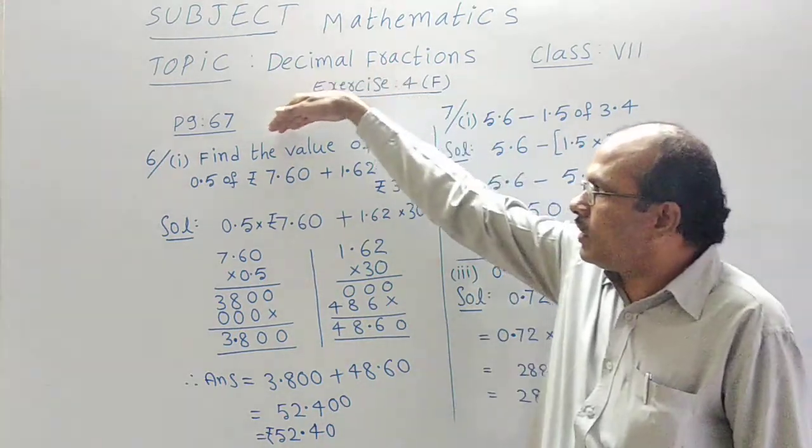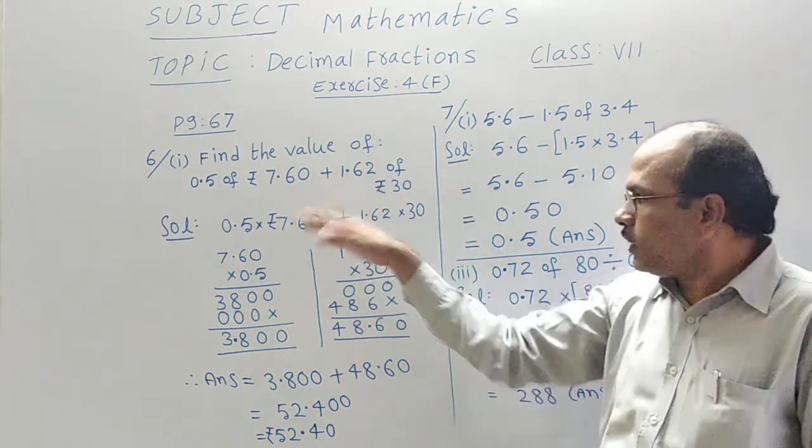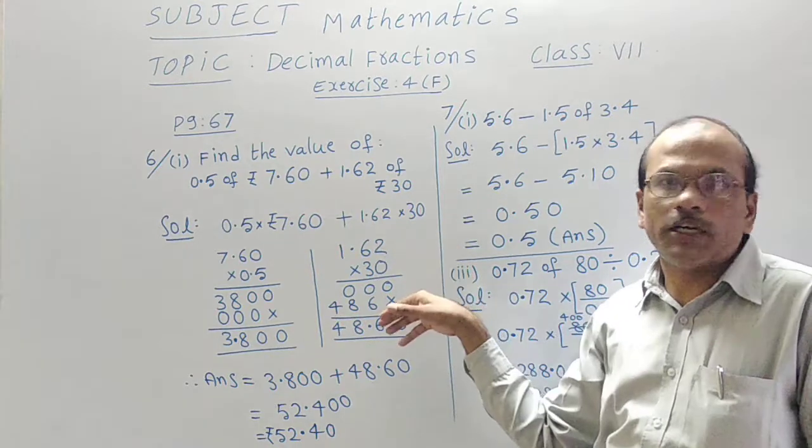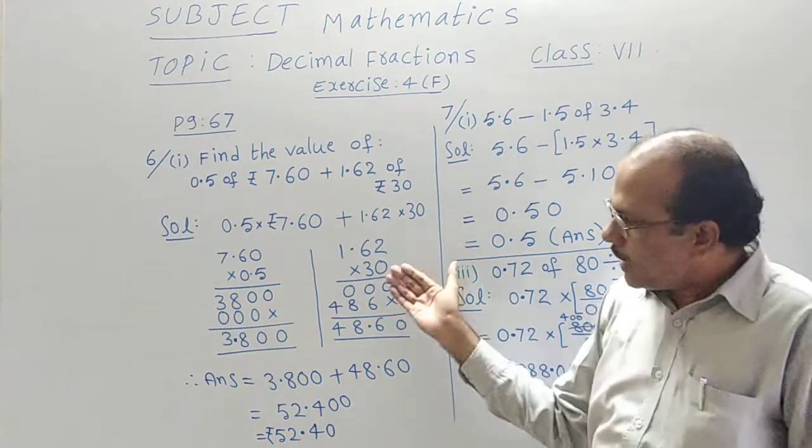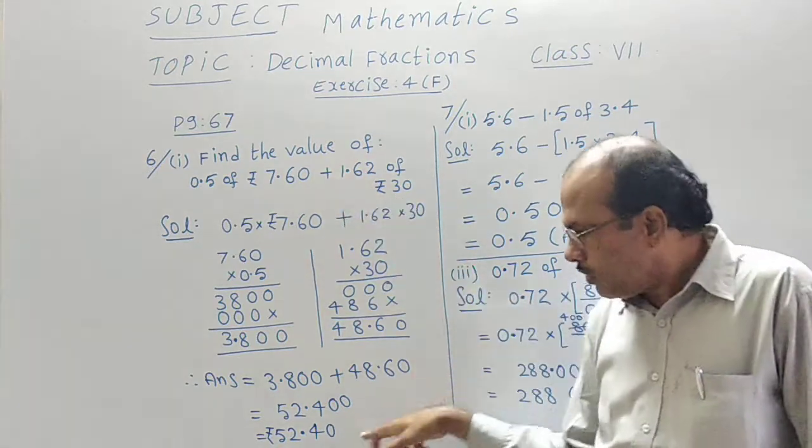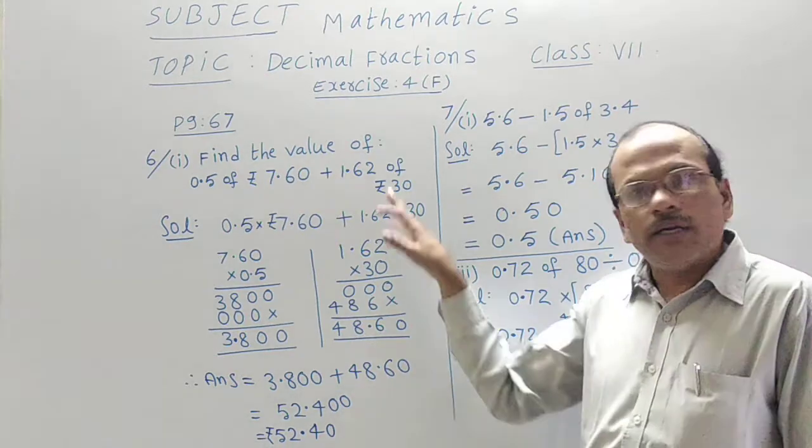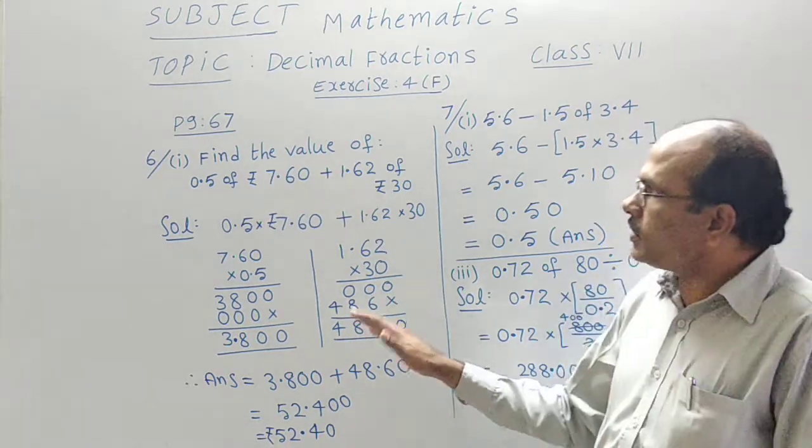That is why they said find the value of first part plus second part. Both the values were arranged with the multiplications separately, and by adding both of them as they said here, finally we got an answer of 52 rupees 40 paise. It is clear now for you.